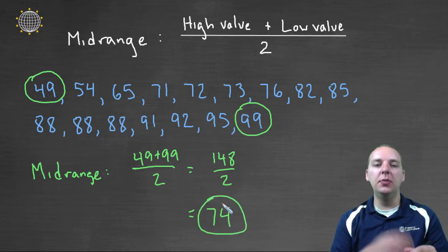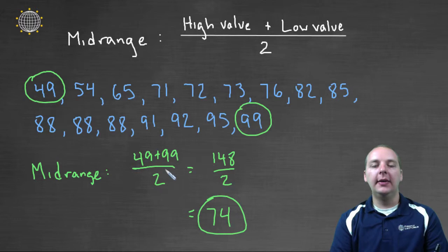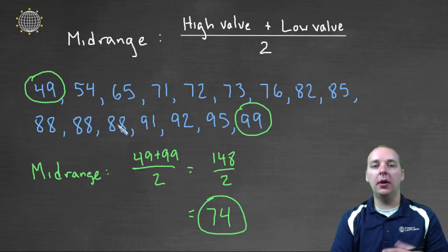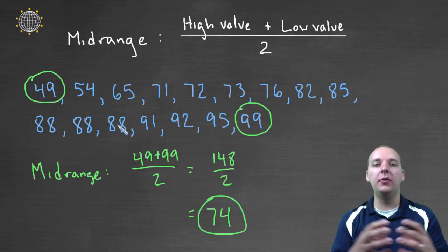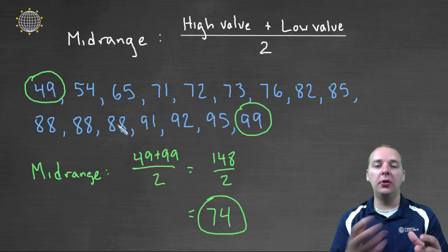So this is the middle of the high and the low value. So some good things and some bad things. The good thing is that this is very quick to apply. It doesn't matter what your middle values are. You just take your low, your high, you average them and you're done.